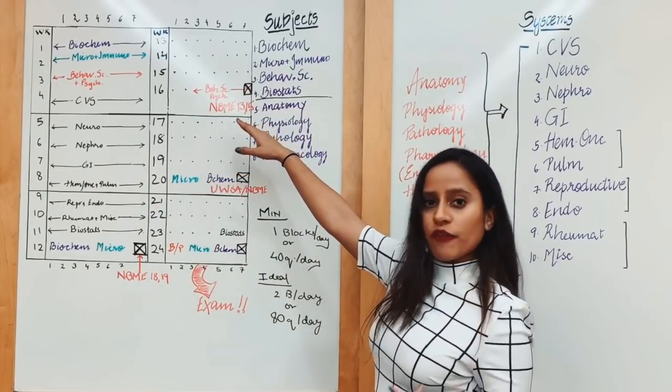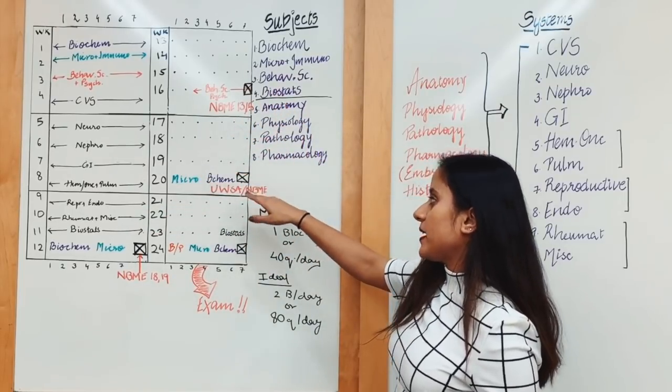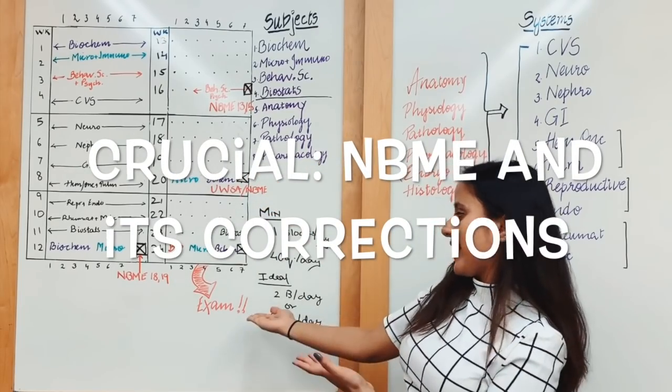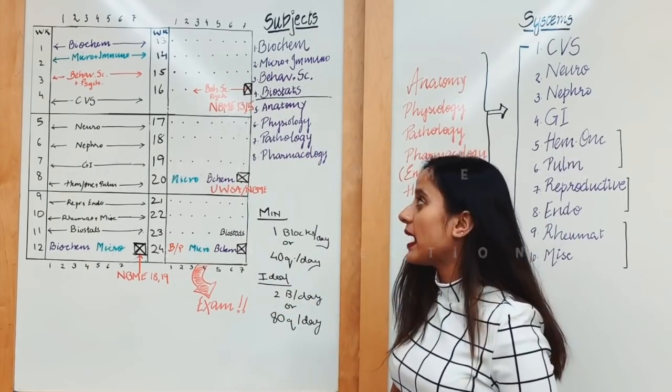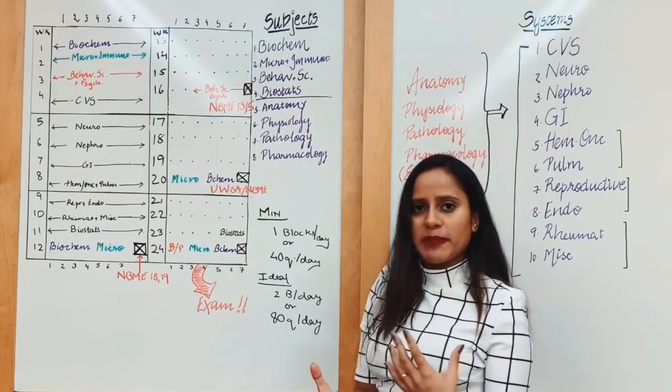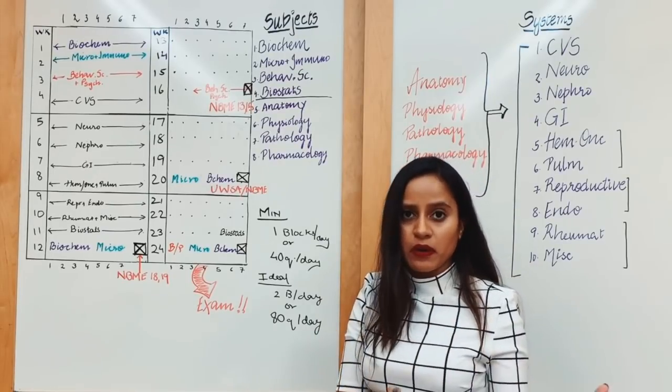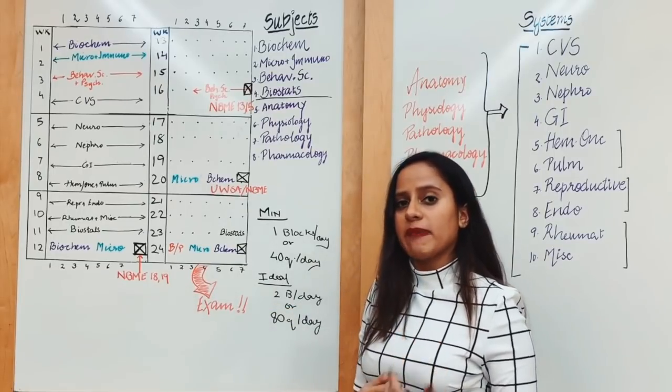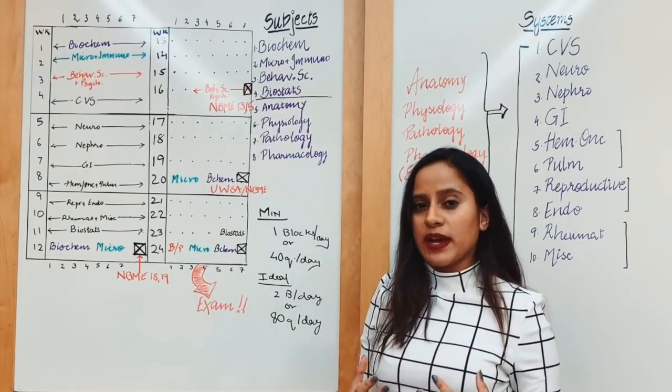Then two NBMEs at the end of your fourth month, and then NBME or UWorld simulation at the end of your fifth month, and then finally your exam day. I would suggest taking two NBMEs on one day back to back because that makes you have a real feel for an eight-hour exam.